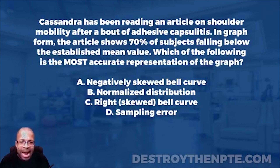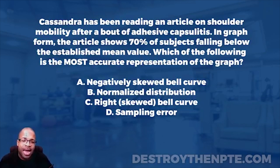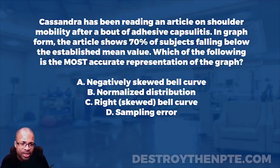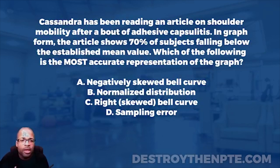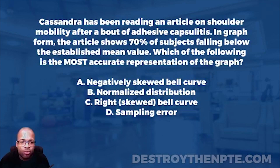Cassandra has been reading an article on shoulder mobility after a bout of adhesive capsulitis — frozen shoulder — a condition with a lot of shoulder mobility restrictions mostly due to the capsule being bound down. But does that really make a difference for this specific question? Not really. The key part is: in graph form, the article shows 70% of the subjects falling below the established mean value — that's where we need to slow down.